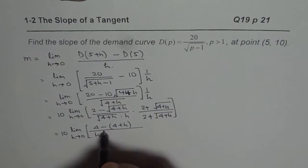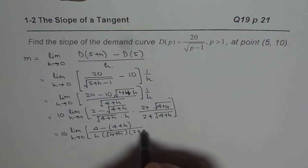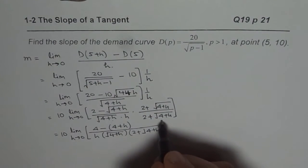And in the denominator, we have the product of these two. So we have H times square root of 4 plus H times 2 plus square root of 4 plus H. All this is in the denominator.